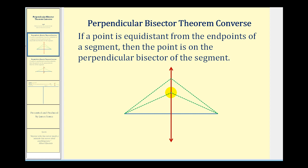For example, if we consider this point here, the converse tells us that if it's equidistant from the endpoints — meaning this segment is congruent to this segment — then this black point must be on the perpendicular bisector. The same would be true for any point equidistant from the endpoints: if this segment is congruent to this segment, this point would have to be on the perpendicular bisector.